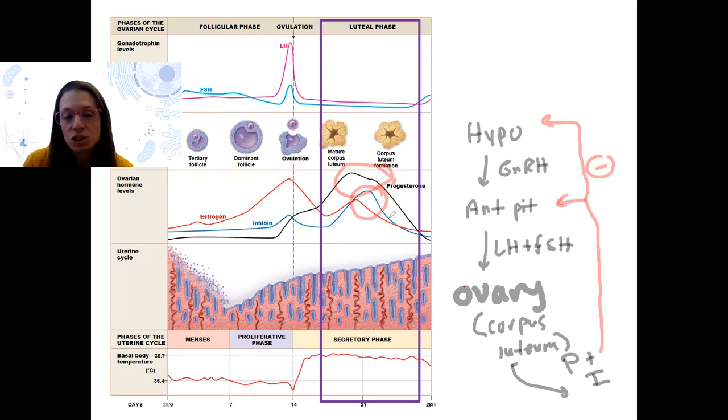So these two hormones cause negative feedback to kick back in and the LH surge is no longer. We've turned off the system. That's good because we don't want anything else to happen at this point. The egg is released.